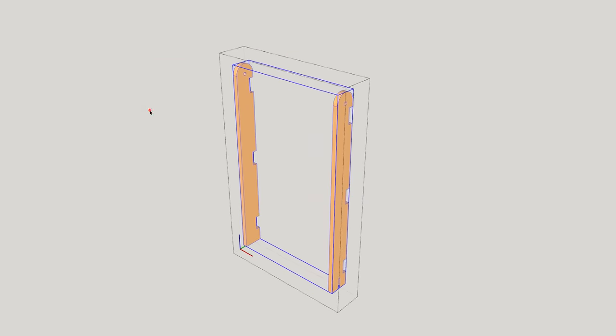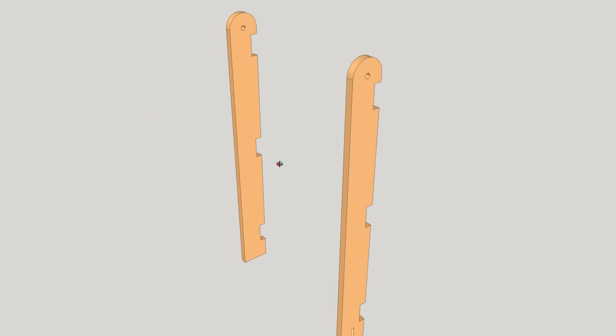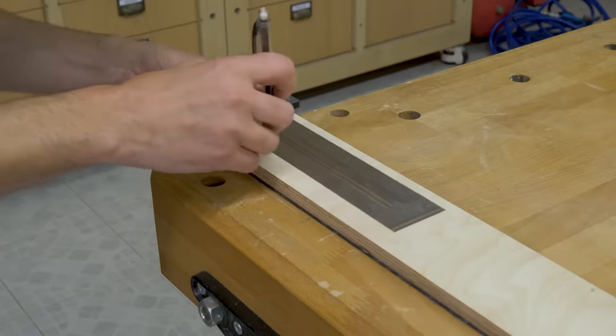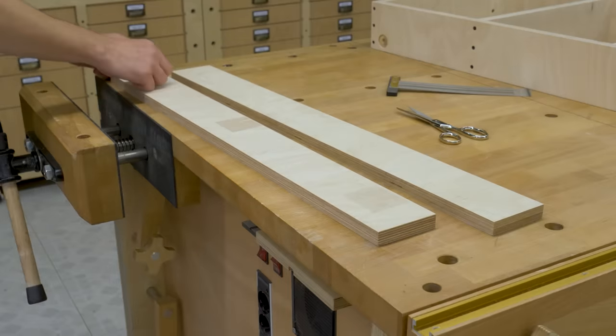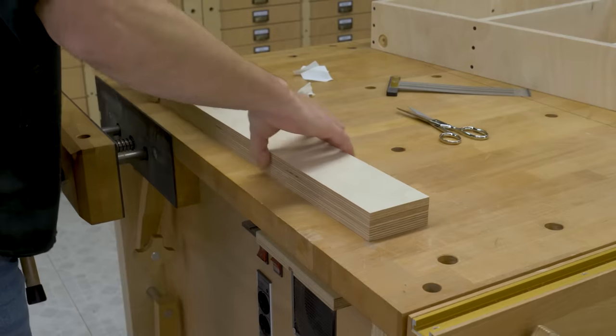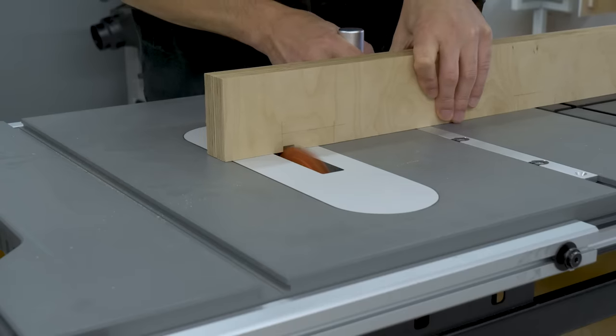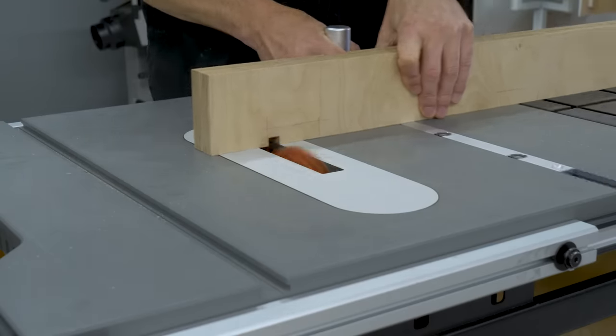It's time to make the two table legs. First, I'll mark all the required rebates to join both legs together. I'll stick the legs together with double-sided tape so that I can machine them at the same time. I'm also going to mark the board with a knife to avoid tear-out at the exit point of the cut.